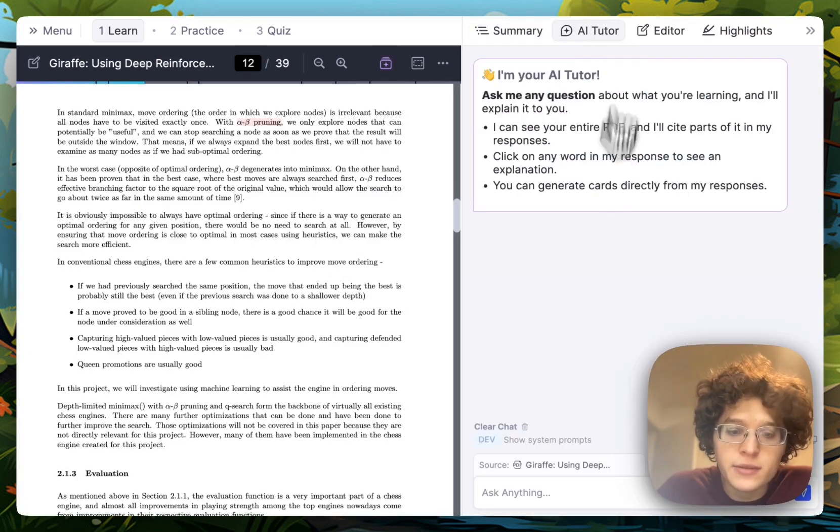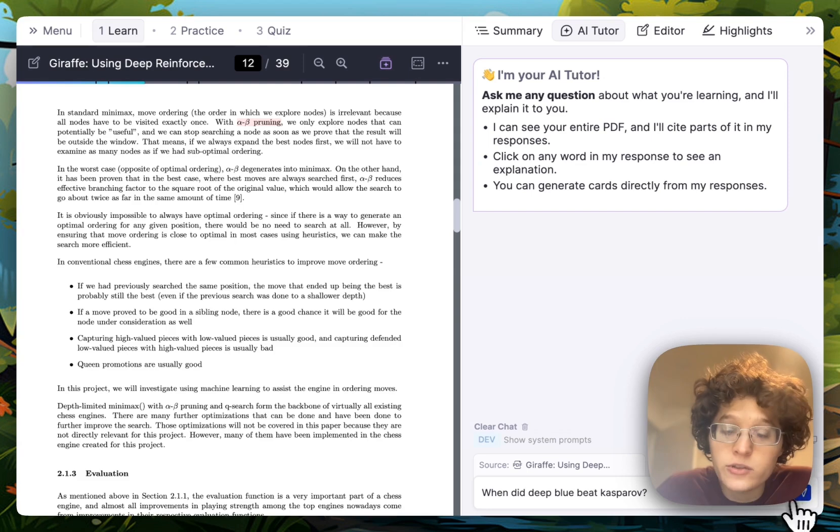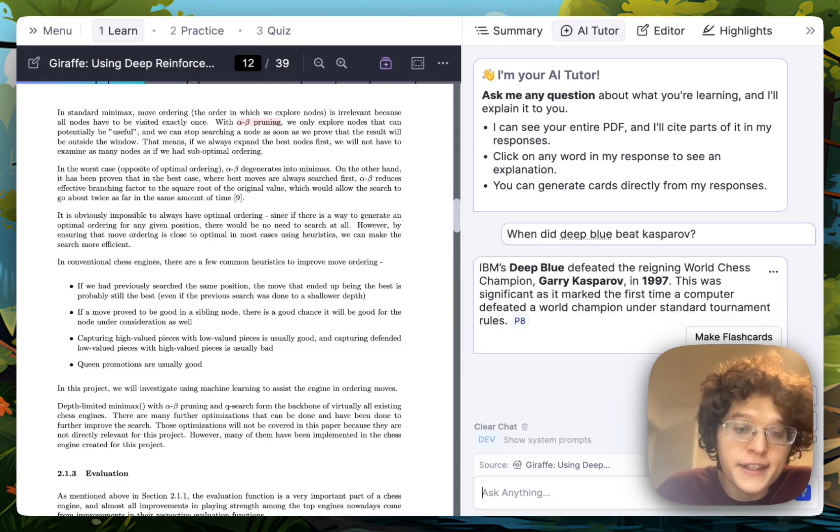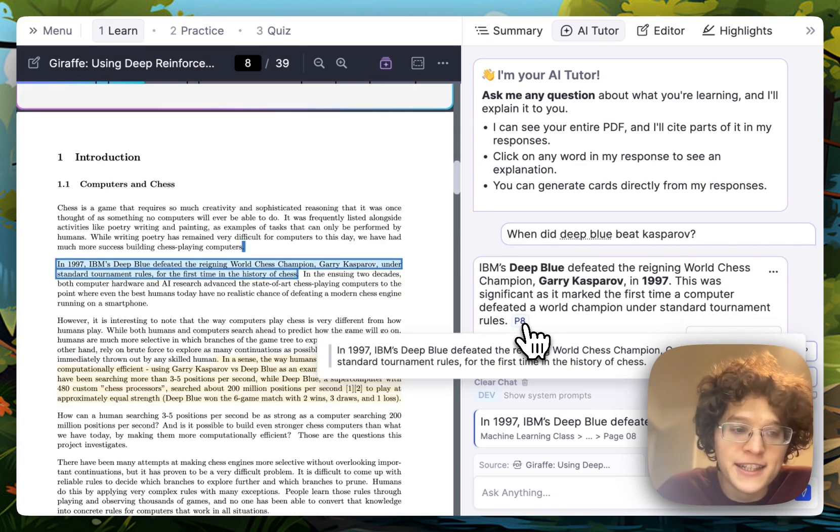If I go and ask the AI tutor a question, such as when did Deep Blue beat Kasparov again, you can see that it's using the full PDF source as the source here. So it will search the PDF, find the answer, and cite it to me in its response. In this case, over here on page 8.